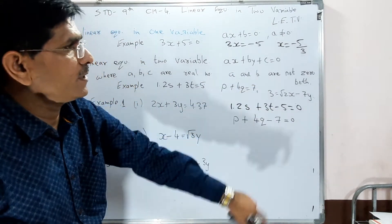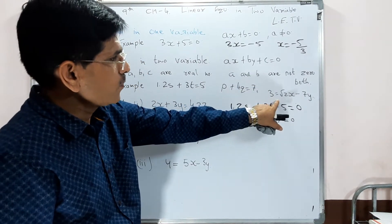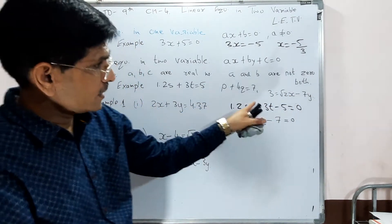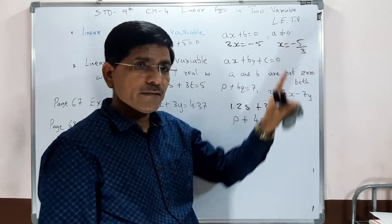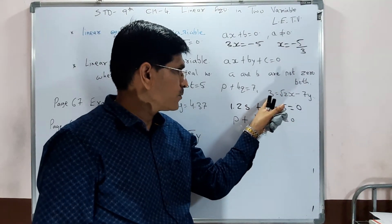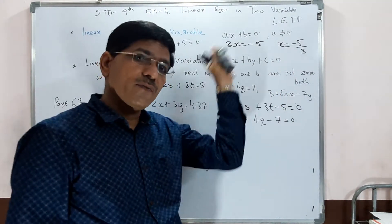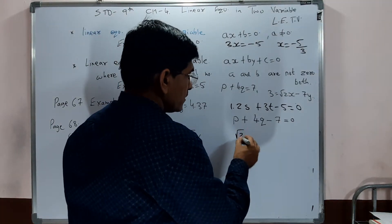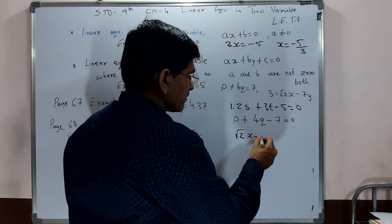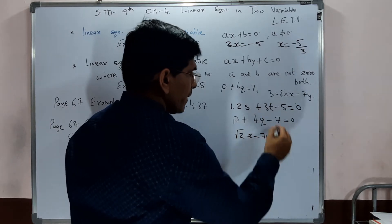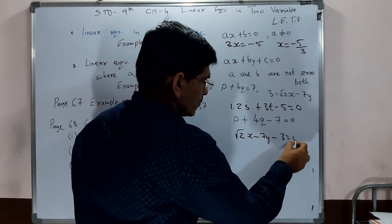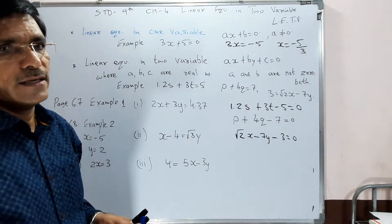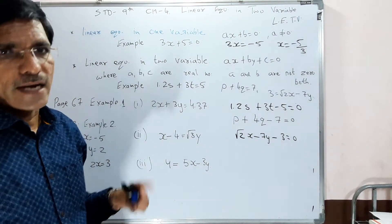One more example: 3 = √2·x - 7. We need to shift all terms to one side. So √2·x - 7 - 3 = 0. That gives us √2·x - 10 = 0 in standard form. So these are 3 examples, and we must write each in standard form.